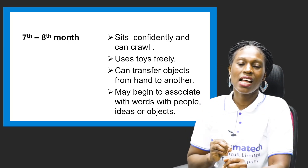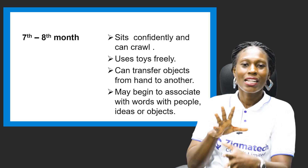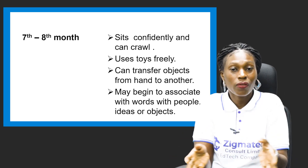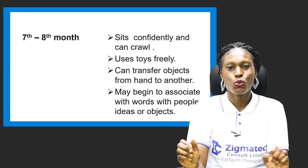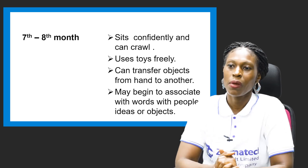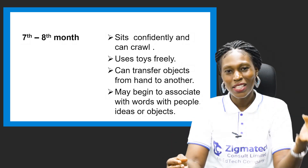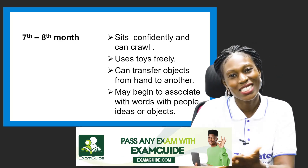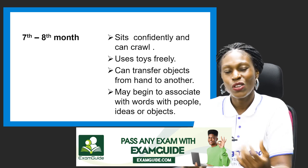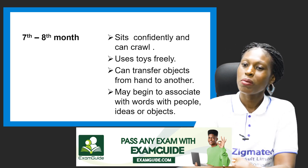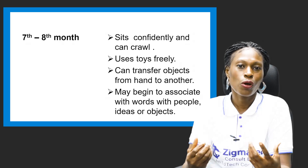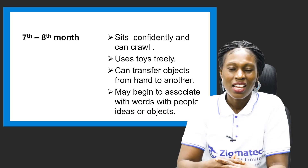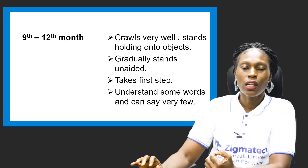From the seventh to eighth month, they can sit confidently and they can crawl very well. They can use their toys freely — playing and doing a whole lot with them. They can transfer objects from one hand to another. They begin to associate words with people, ideas, or objects — when someone says mama or dada, they know who that is. These sounds are beginning to form and come along.